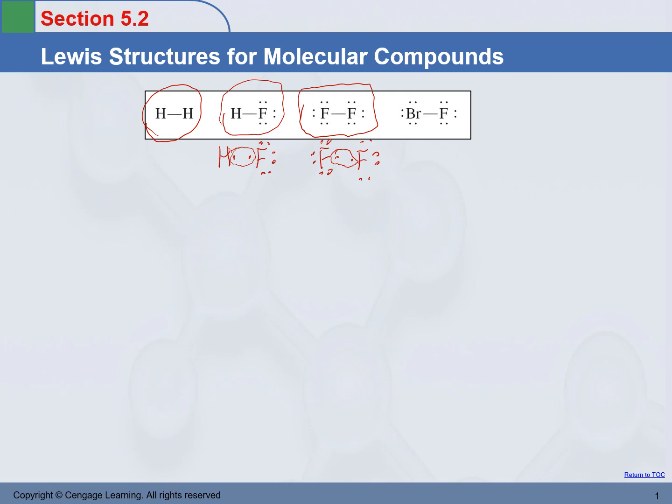Now we look at the Lewis structures of all these different molecules here. What we notice is that in the Lewis structures, there are actually electrons that are shared. There are also electrons that are not shared between the atoms.